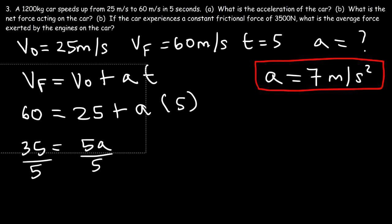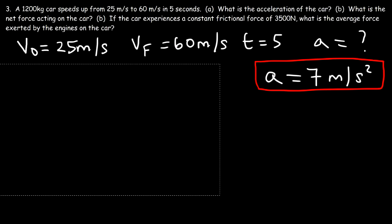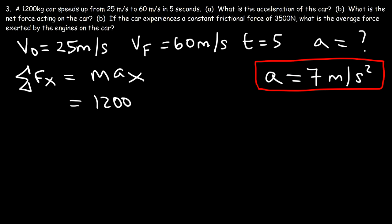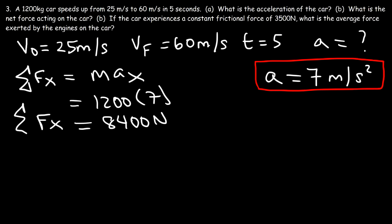Now that we have the acceleration, we can calculate the net force. Part B: what is the net force acting on the car? The net force in the horizontal direction equals mass times horizontal acceleration. It makes sense that the car travels in the horizontal direction, so F equals ma: 1200 times 7 equals 8400 newtons. That's the net force in the x-direction.